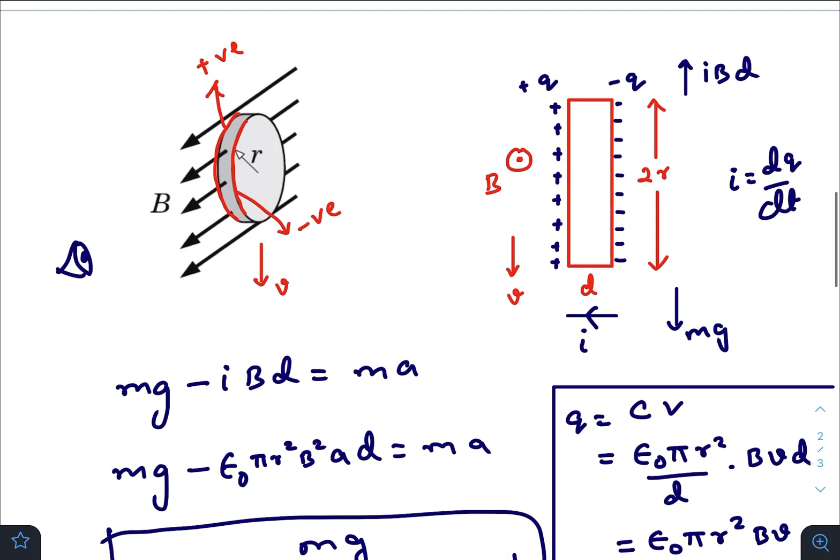So when the conductor moves downwards, it cuts the magnetic field in this way. All the positive charges accumulate on this surface and the negative charges accumulate on this surface. I have already marked it here.